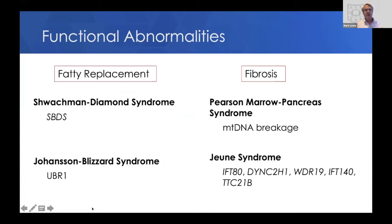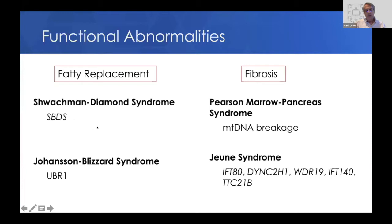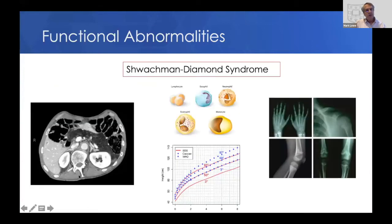Next, functional abnormalities — I've divided those into ones that cause fatty replacement of the pancreas and ones that cause fibrosis. All of these are related to genetic defects. Pearson marrow-pancreas syndrome is due to breakdown of mitochondrial DNA. Johansson-Blizzard syndrome are also seen. The most common of these is Schwachmann-Diamond syndrome. As shown in this CT scan, you see a fatty pancreas — normally the pancreas is grayscale like the liver, but here this pancreas is mostly replaced with fatty tissue.